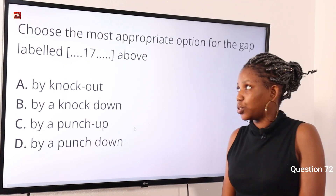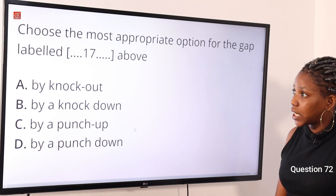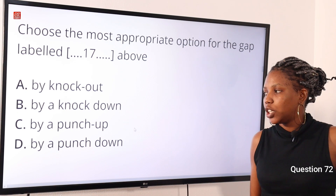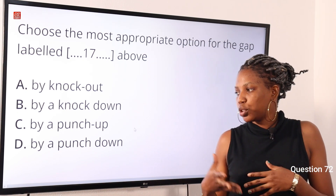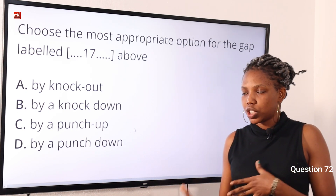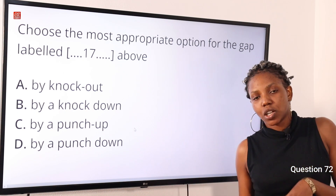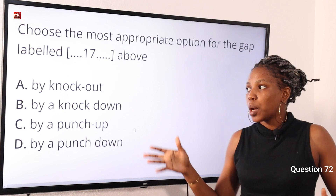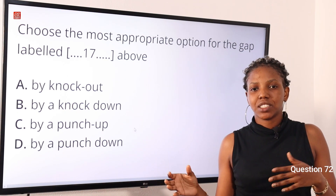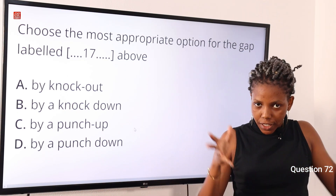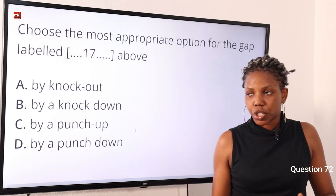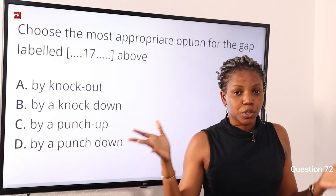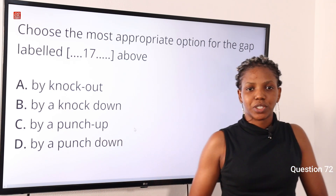Question 72: Choose the most appropriate option for the gap — option A: by knockout, option B: by a knockdown, option C: by a punch-up, option D: by a punch-down. In boxing, the correct choice of word is 'by knockout.' The passage is trying to talk about one opponent taking down another opponent by a punch. So option A is the correct answer.